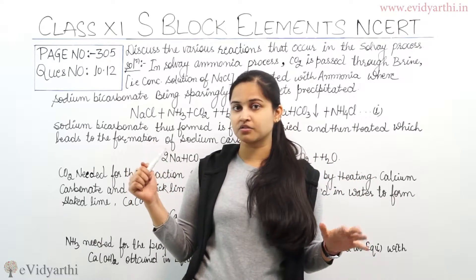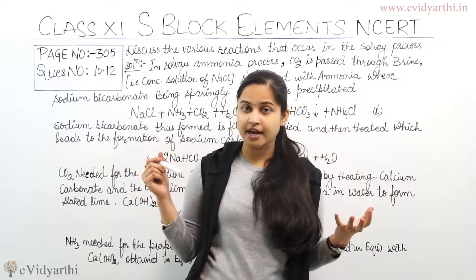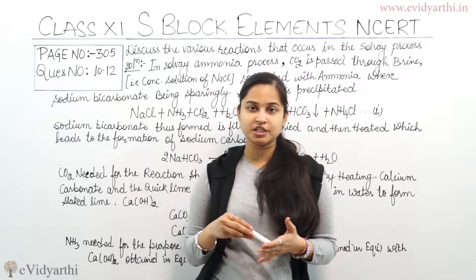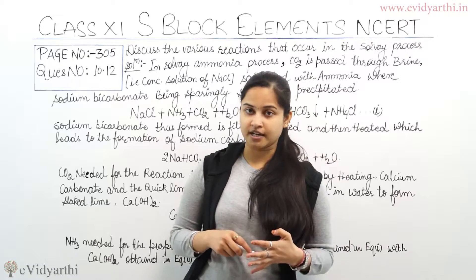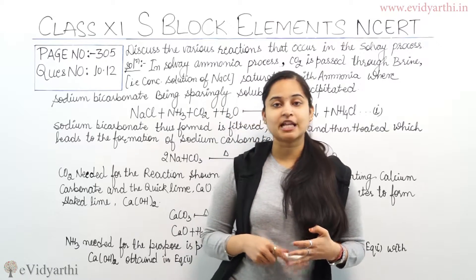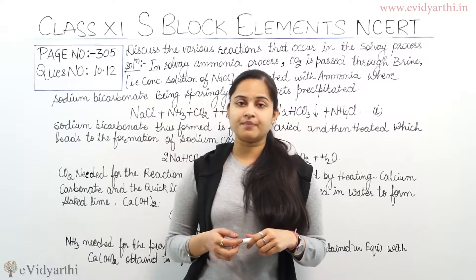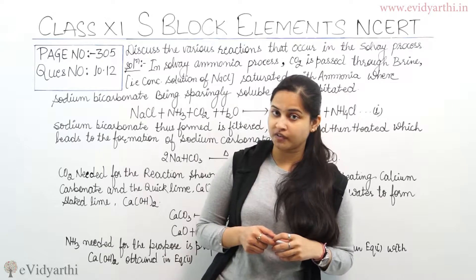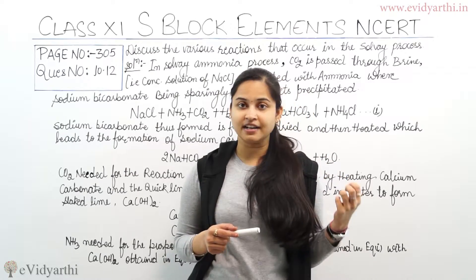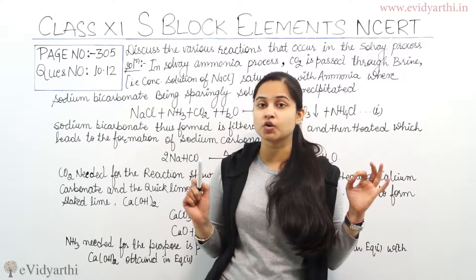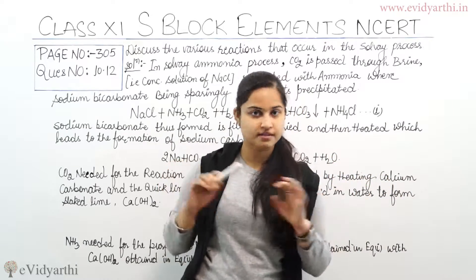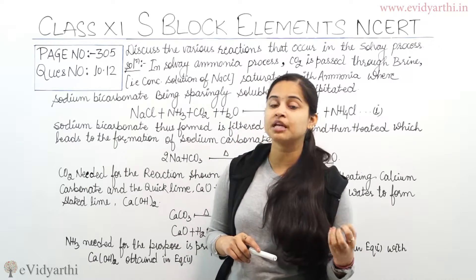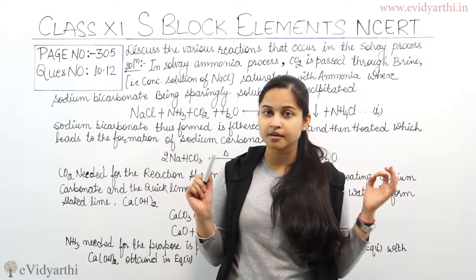The CO2 required for this reaction is prepared by heating calcium carbonate. When calcium carbonate is heated, we get carbon dioxide and quicklime, that means calcium oxide, CaO. Calcium oxide is then added to water and we get slaked lime, which is calcium hydroxide, Ca(OH)2.